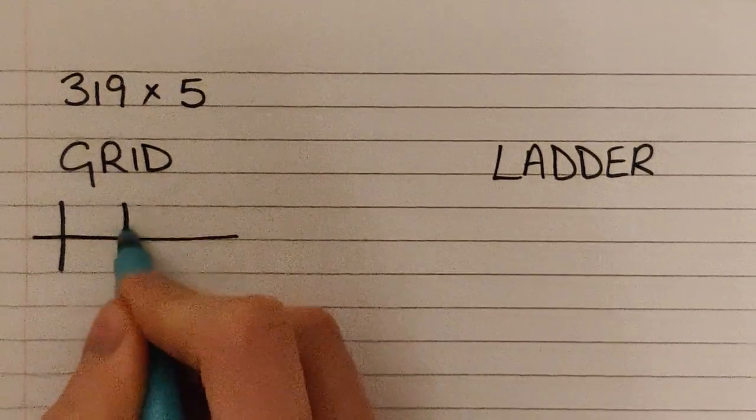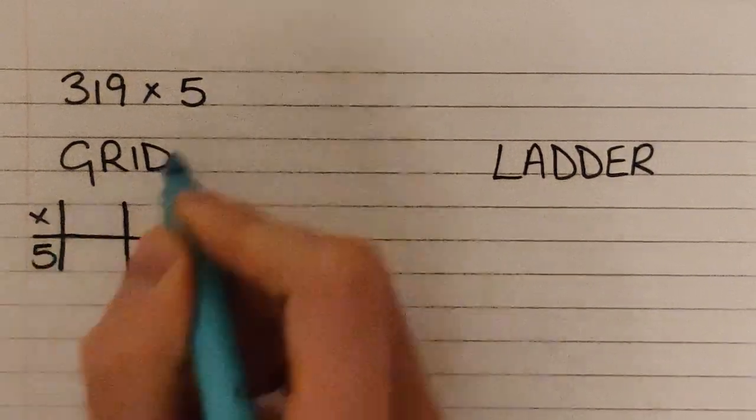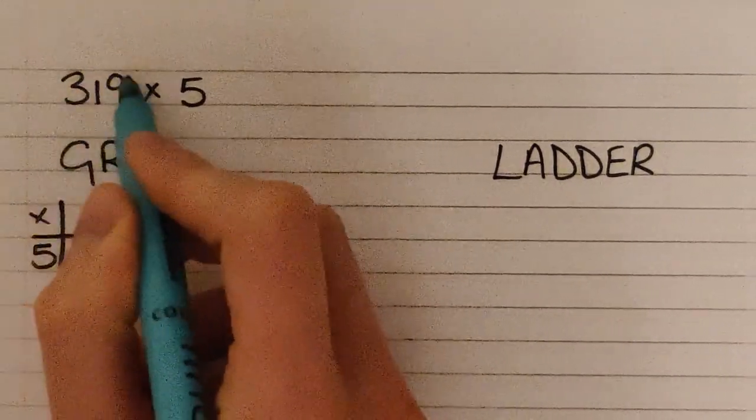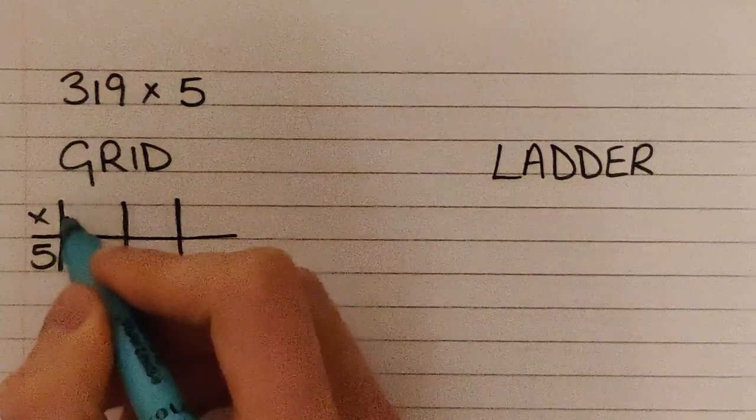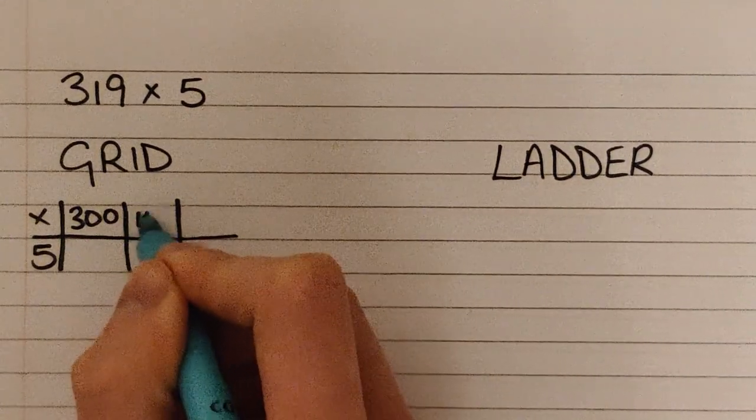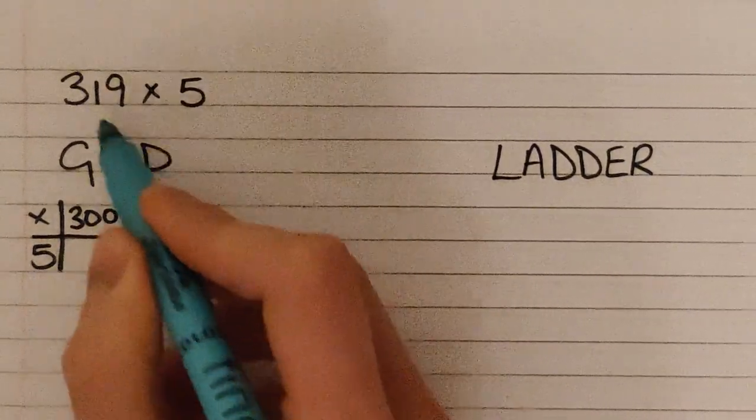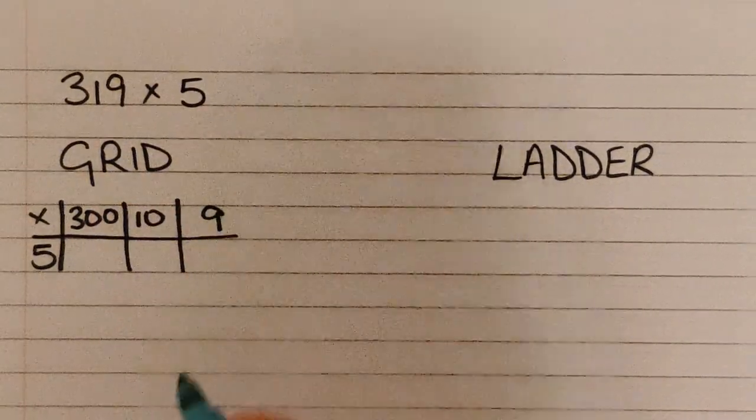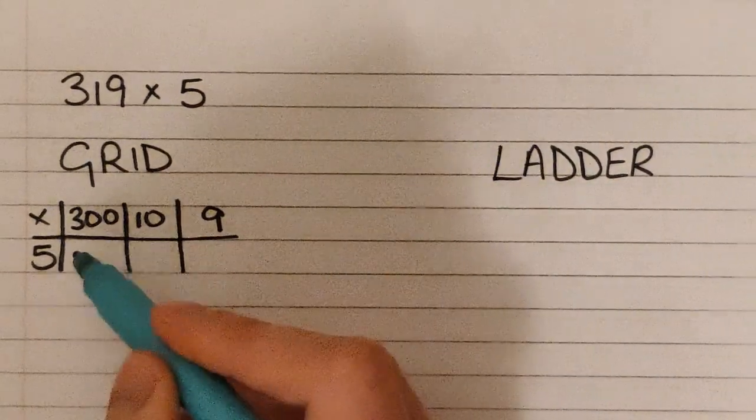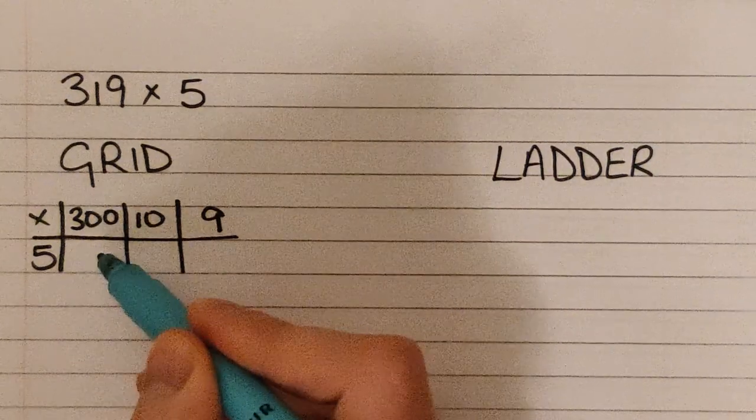You lay it out like this. We are timesing it by 5 and we're timesing the 319 by the 5, so we're going to put 300, 10, and 9 because we've got hundreds here, tens here, and ones there. What you do is you times the 300 by the 5 first, starting in the hundreds column.